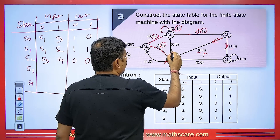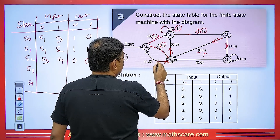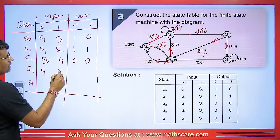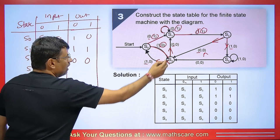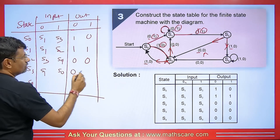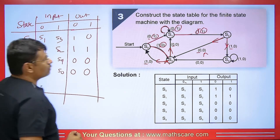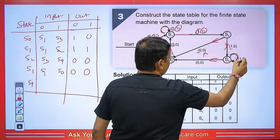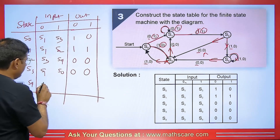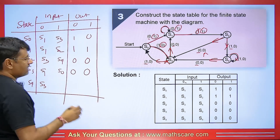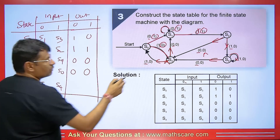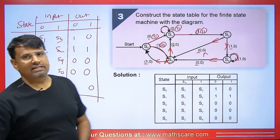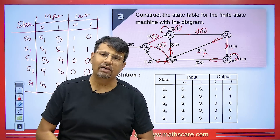S3 is going to S1 and S0. For input 0 it goes to S1, and for input 1 it goes to S0, with both outputs being 0 and 0. S4 is going to S3 and making a self-loop. For input 0 it goes to S3 and for input 1 it goes to S4, with both outputs being 0 and 0. This is how we make the table.